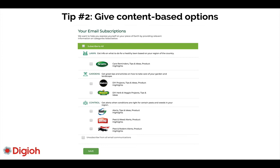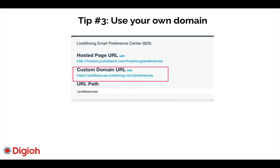Tip number two: give them content-based options. Highlight all the different types of content you offer. A lot of times subscribers don't want the tips email but do want product announcements, so segment it out and let them opt in or opt out of specific content types. When they originally subscribed you may have opted them into everything, which is fine, but giving them the option to opt out of specific topics alone will reduce your unsubscribe rate by over 30%.